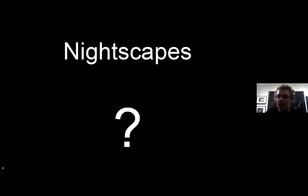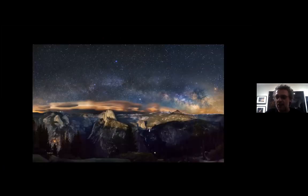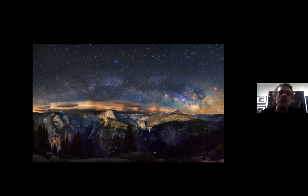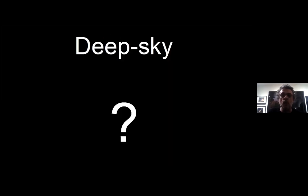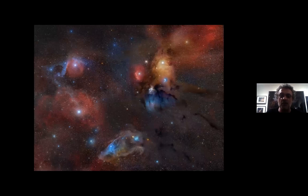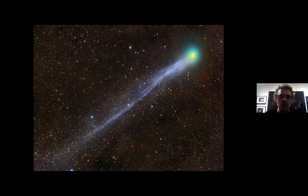Nightscapes are images that contain stars — usually the Milky Way, not necessarily — and that also contain a piece of land, something earthy that we relate to. Deep sky photography is where we use a telescope to take pictures of galaxies, nebulae, and other objects like comets. They require different techniques and approaches, but they're both really astrophotography.